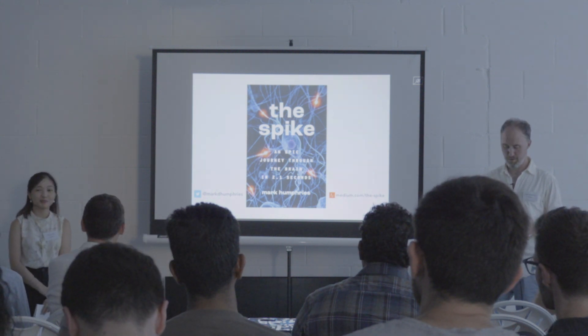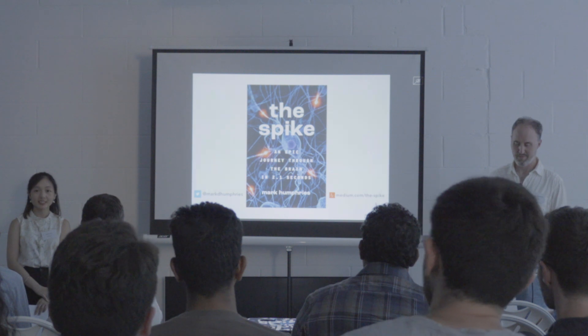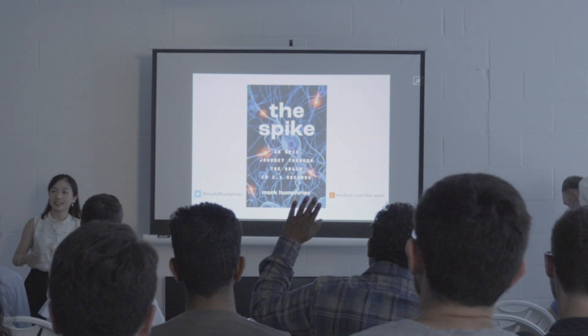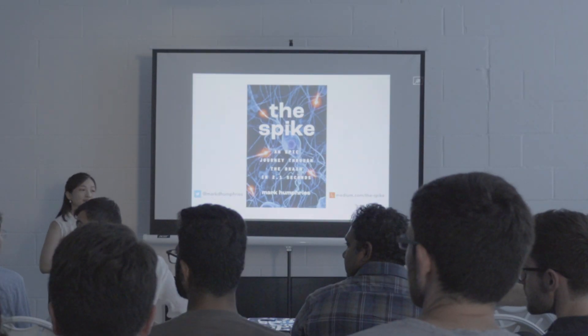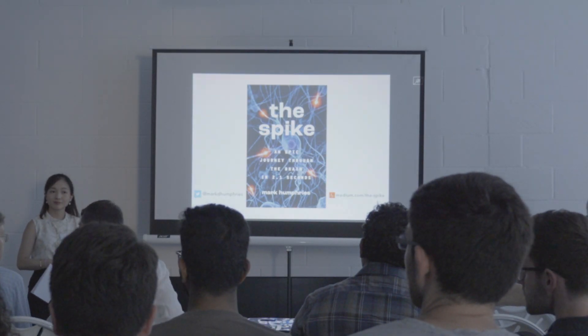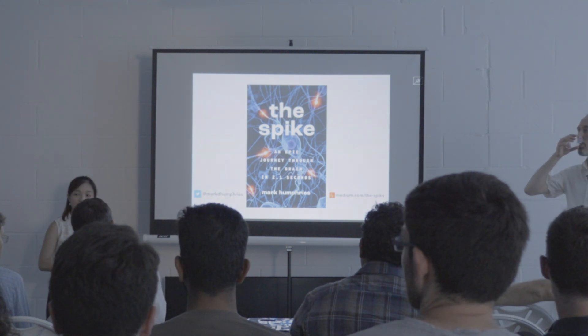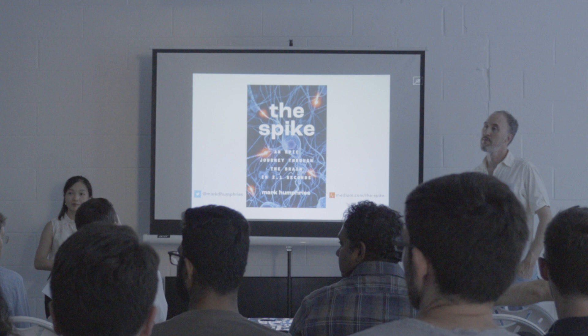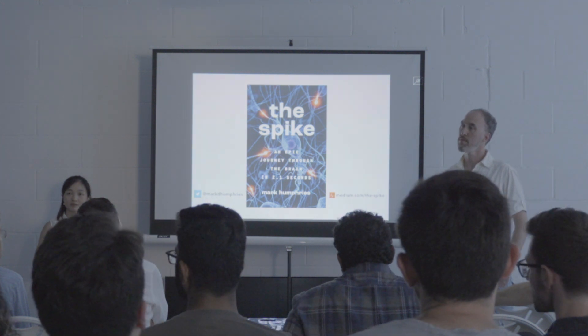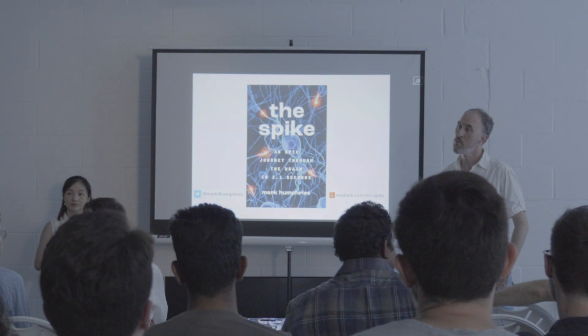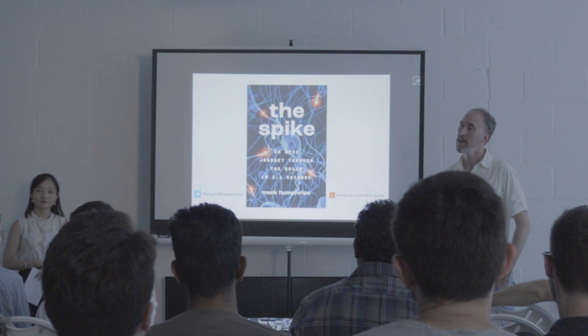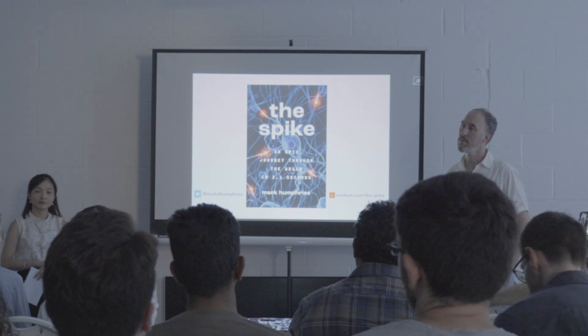Q&A begins. An audience member asks: when you say you can't measure spikes, isn't EEG measuring them? The speaker clarifies: EEG is a measurement of a very large-scale electrical field generated by millions, if not billions, of neurons' activity — you can't resolve individual neurons. There are only rare cases where you can record the actual activity of an individual neuron in the human brain.